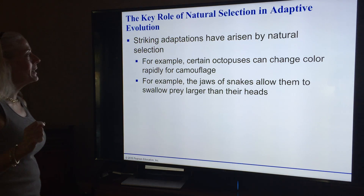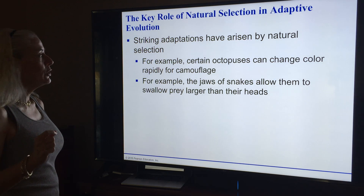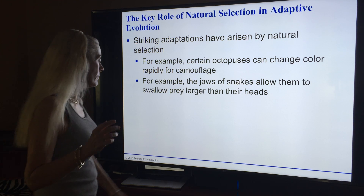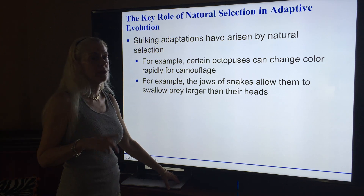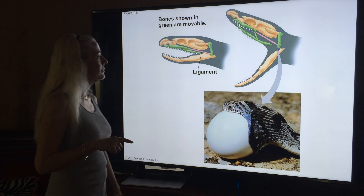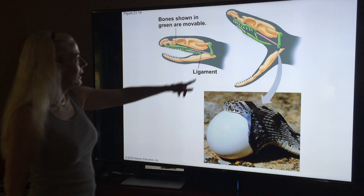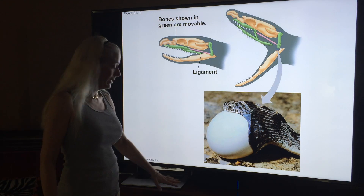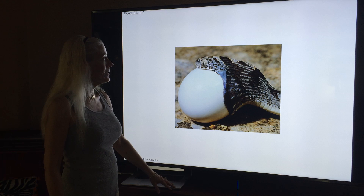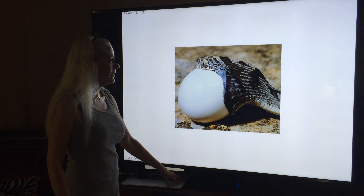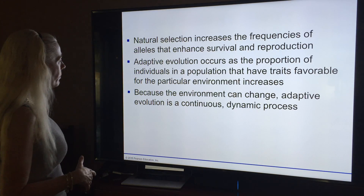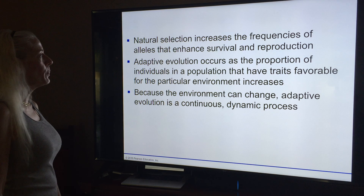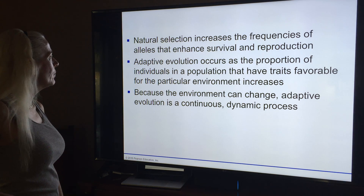Striking adaptations have arisen by natural selection. Certain octopuses can change color rapidly for camouflage. The jaws of snakes allow them to swallow prey larger than their heads — they have a ligament that unhinges. Natural selection increases the frequency of alleles that enhance survival and reproduction. Adaptive evolution occurs as the proportion of individuals with traits favorable for their particular environment increases.